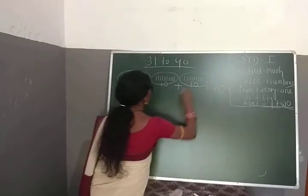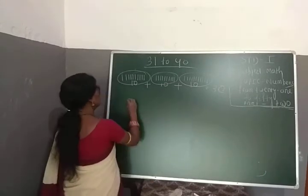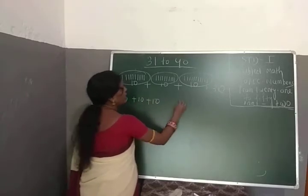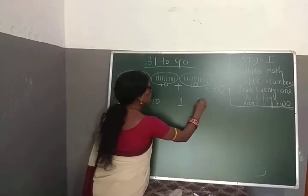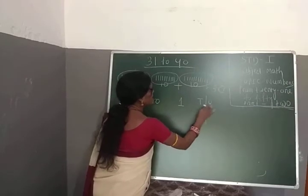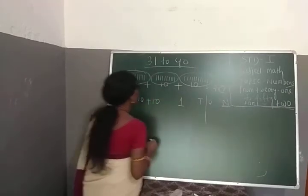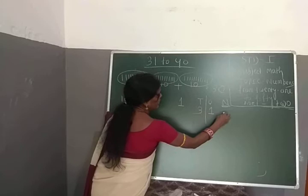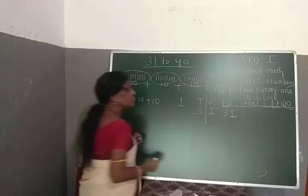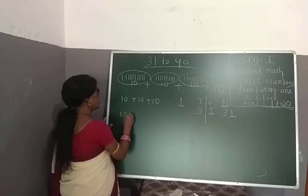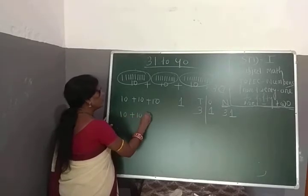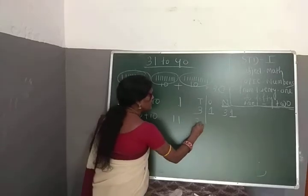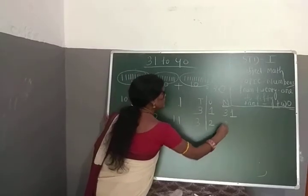If we have 3 bundles and 1 loose stick, then in the tens place we write 3 and in the ones place we write 1, so the number becomes 31. If there are 3 bundles and 2 loose sticks, then we write 3 in the tens and 2 in the ones, so the number is 32.